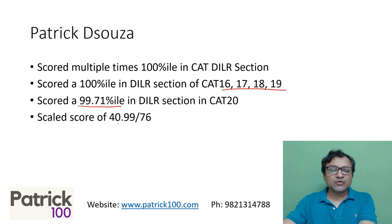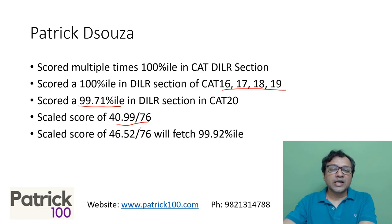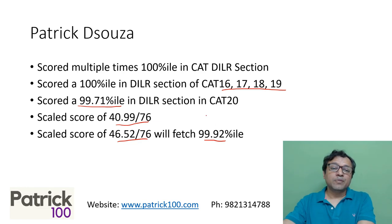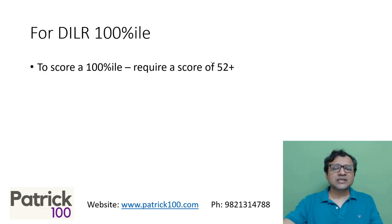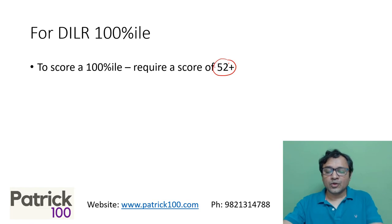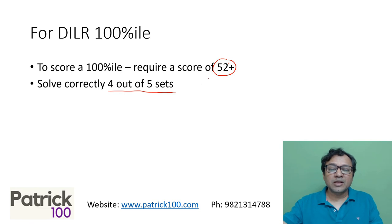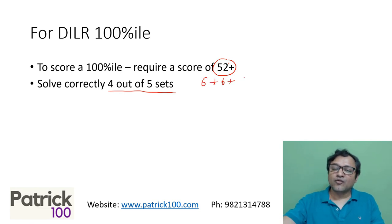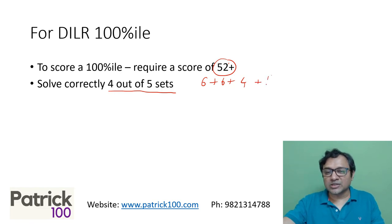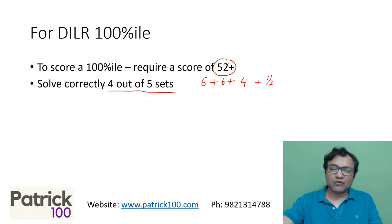My scale score in CAT 20 was 41. A scale score of 46.5 would have given a 99.92 percentile. To score 100 percentile in DILR, you need a scale score of around 52 — roughly four out of five sets, or perhaps a six-question set plus another six-question set plus a four-question set, maybe with one or two additional questions.